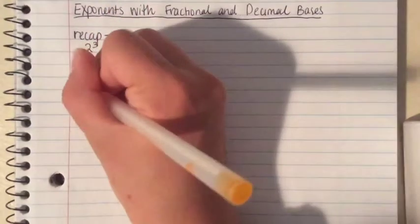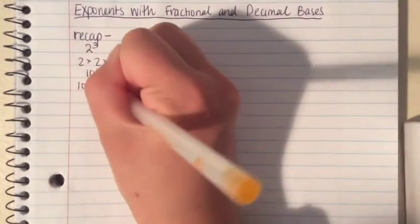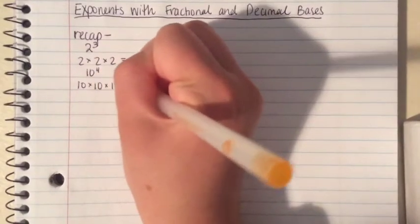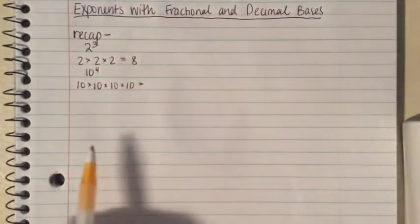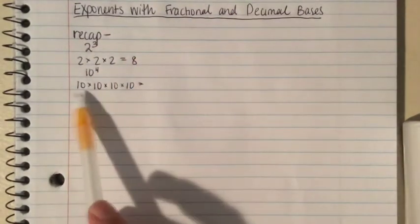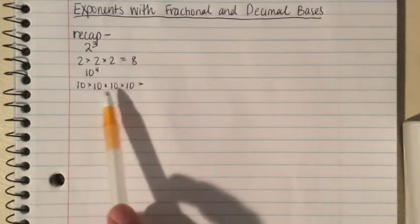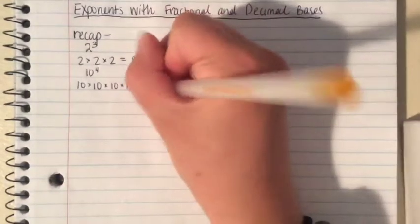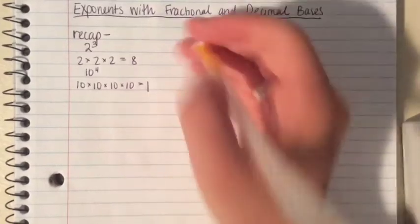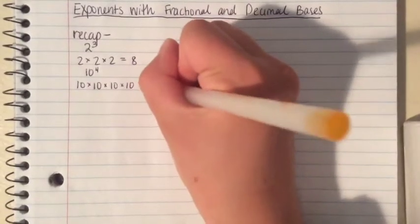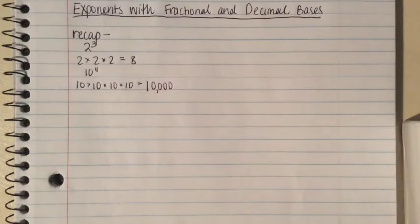which is 10 times itself 4 times. Remember, when multiplying by 10, you can multiply by 1 and add 1, 2, 3, 4 zeros, so 10,000. Now let's look at what happens when we raise a fractional